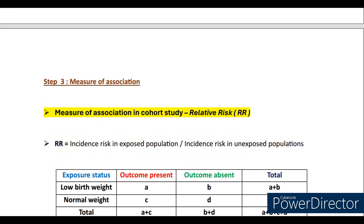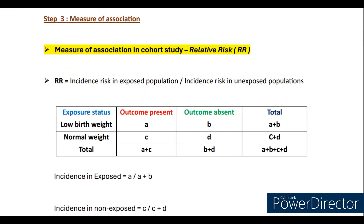We use the same table structure for case control studies as well, but in case control studies we use the terms cases — those having the disease — and controls, who are free from disease. The basic structure and filling of the table is similar to cohort study. After constructing the table, the most important thing is the measure of association. In a cohort study the measure is relative risk (RR), whereas in case control studies it is the odds ratio.